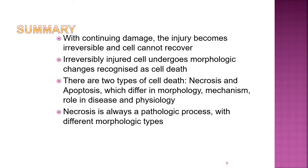In summary, with continuing damage the injury becomes irreversible and the cell cannot recover. Irreversibly injured cells undergo morphologic changes recognized as cell death. There are two types of cell death: necrosis and apoptosis. Necrosis is always a pathologic process with different morphologic types, as we have seen.